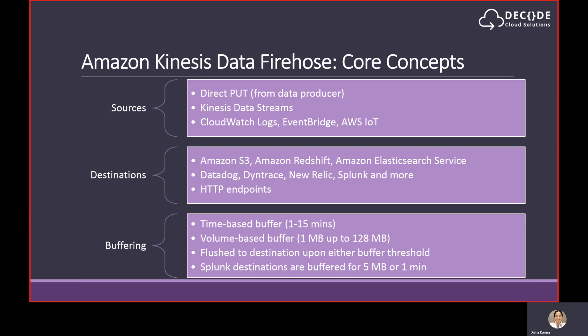There are various sources for Data Firehose. First is direct put from the data producer — you can send data using the Kinesis Agent, the Data Firehose API, or the AWS SDK. You can also configure your Firehose delivery stream to automatically read data from an existing Kinesis Data Stream, and you can use CloudWatch Logs, EventBridge, or AWS IoT as a source. For destinations, apart from S3, Redshift, and Elasticsearch, there are also a range of partners including Datadog, Dynatrace, Logic Monitor, MongoDB, New Relic, Splunk, and Sumo Logic. For HTTP endpoint delivery, there are defined request and response formats, and endpoints have three minutes to respond to a request before a timeout occurs.